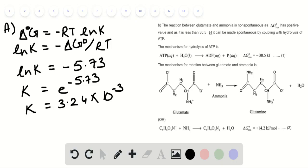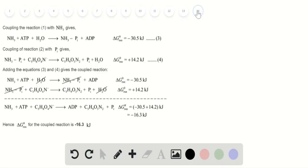We have the mechanism for hydrolysis of ATP into ADP as shown, along with the mechanism for the reaction between glutamate and ammonia. We couple both reactions, reaction A and reaction B.